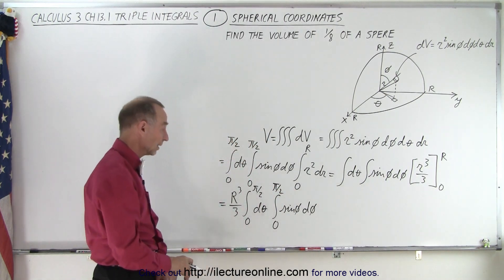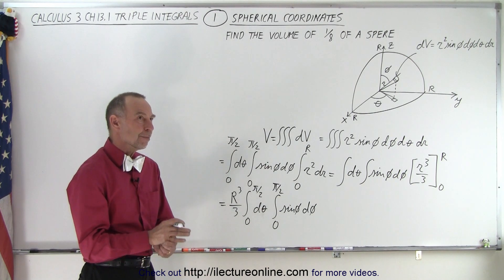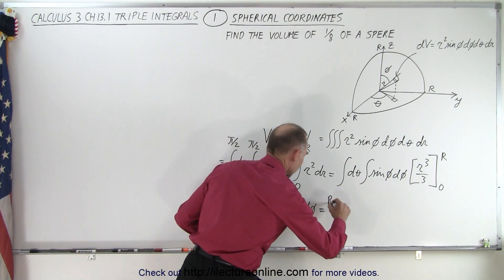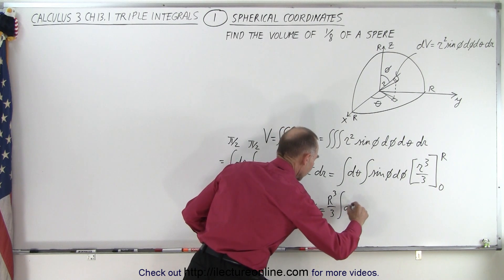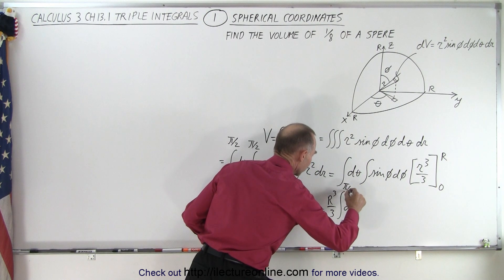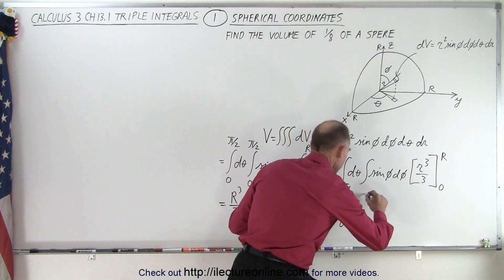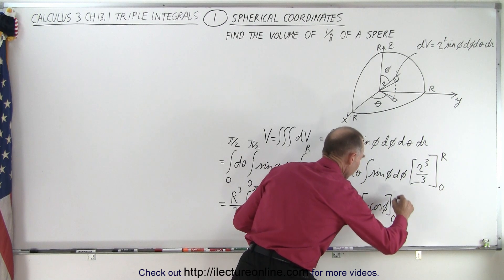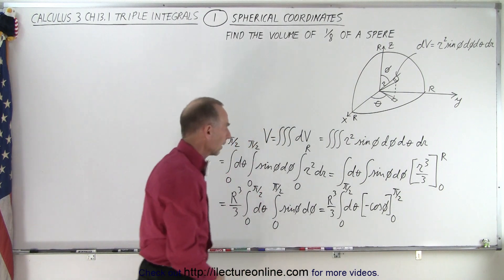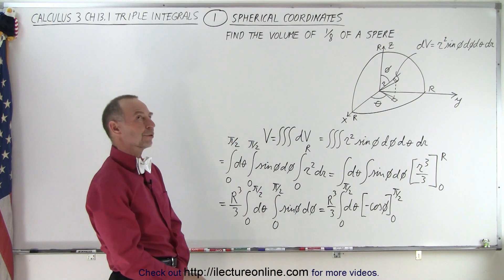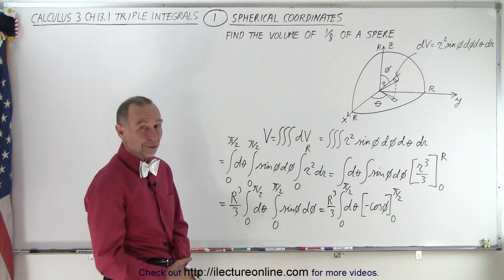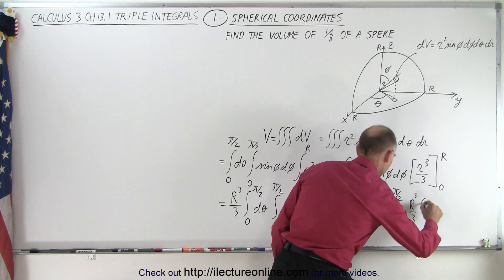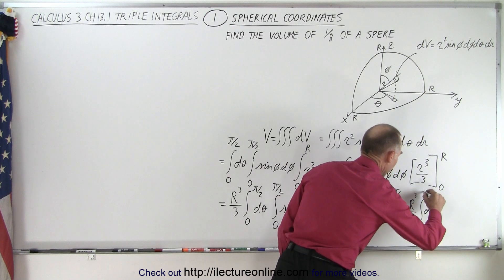And notice the integral limits of integration here is from 0 to pi over 2. So what is the integral of the sine? The derivative of the sine is the positive cosine, so the integral of the sine is the negative cosine. So this becomes equal to r cubed over 3 times the integral of d theta from 0 to pi over 2, and then the integral of this is going to be the negative cosine of phi, and that goes from 0 to pi over 2.